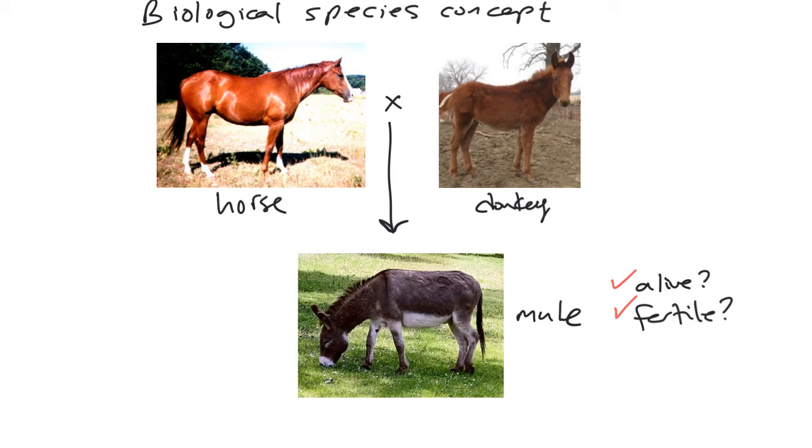In this case, we know that mules are not fertile—mules are sterile—and therefore, that defines the horse as one species and the donkey as a separate species.